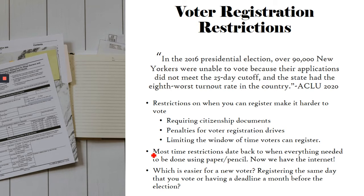Most of these restrictions date back to when everything needed to be done on paper and mailed in, but now we have the internet, which makes it faster and easier to register. Think about it — imagine you're a new voter. Which would be easier: registering the same day you vote, or having a deadline a month before the election? Personally, I think same-day registration would be easier, because if it's your first time voting you may not know exactly what you're doing, and not having to worry about registering beforehand would make it a lot easier.